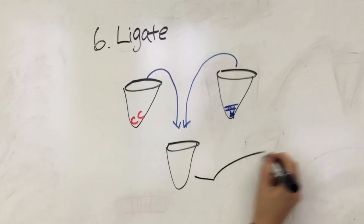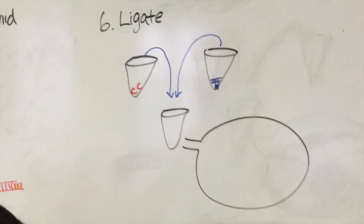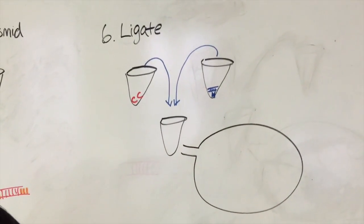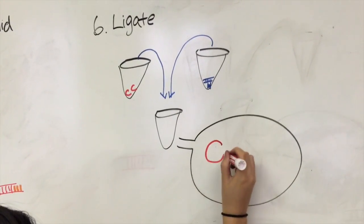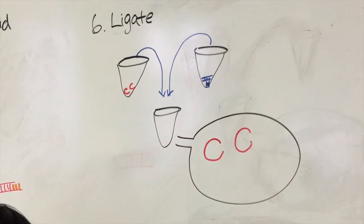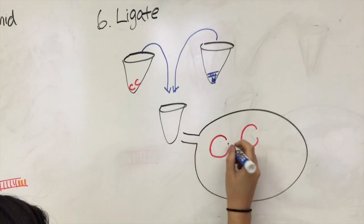As mentioned before, the cohesive ends are formed using the same restriction enzyme to cut off the desired gene of interest and cut open the target plasmid. T4-DNA ligase can also ligate blunt ends, but this usually requires different conditions.